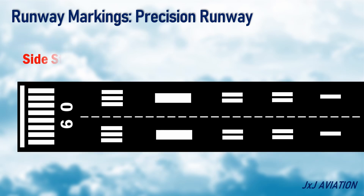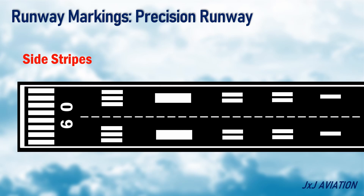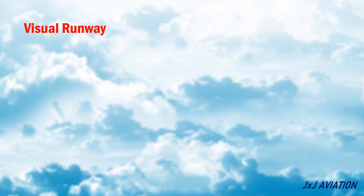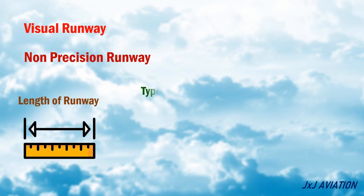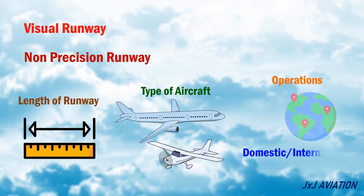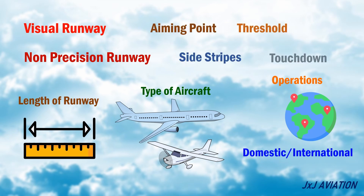Runway side stripe markings are solid white lines that mark the edge of the runway, used to easily identify the width of the runway. On visual runways and non-precision runways, depending on the length of the runway, the type of aircraft, and the type of operations that are performed, some additional runway markings like the ones in a precision approach runway will also be available.